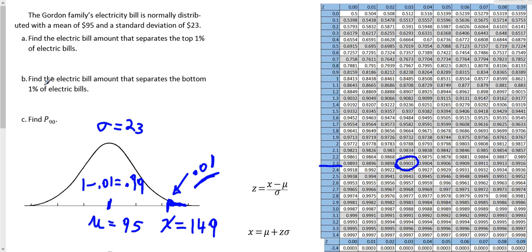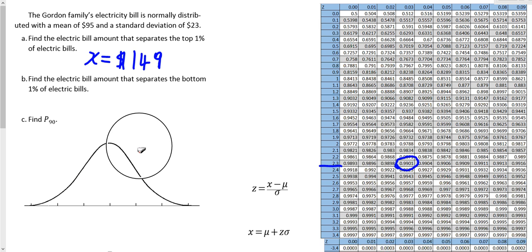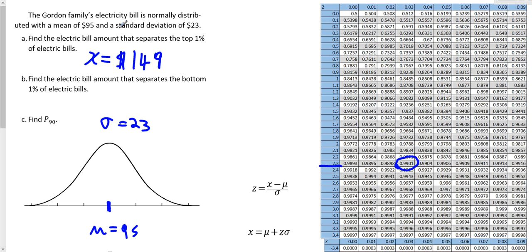Now let's take a look at Part B: find the electric bill amount that separates the bottom 1%. This is slightly different. The answer for Part A was $149, which separates the top 1%. Now we're looking at the bottom 1%, down at the left tail. We want that lower area to be 1%, or 0.01.